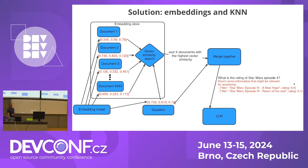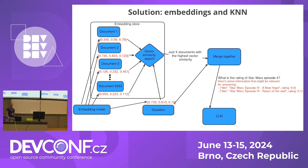The retrieved context is then attached to the user's question. For example, the question 'What is the rating of Star Wars Episode 4?' gets augmented with relevant retrieved information. This augmented message is then sent to the LLM so it can produce an accurate response.